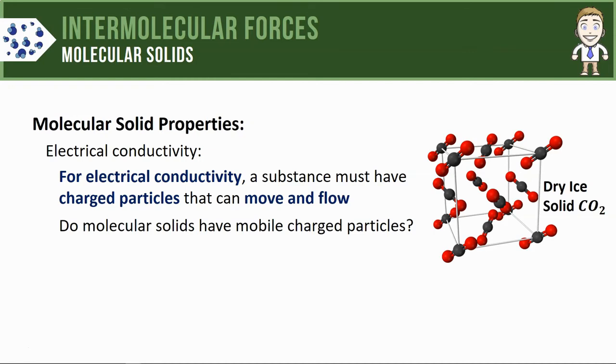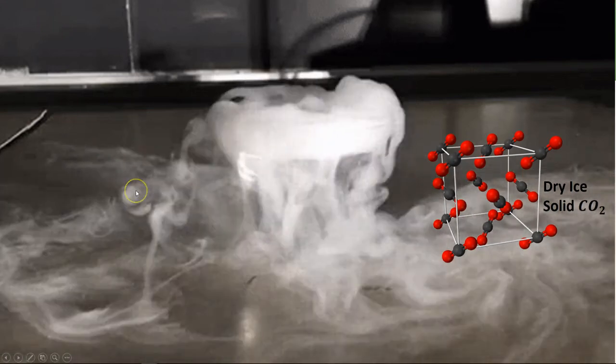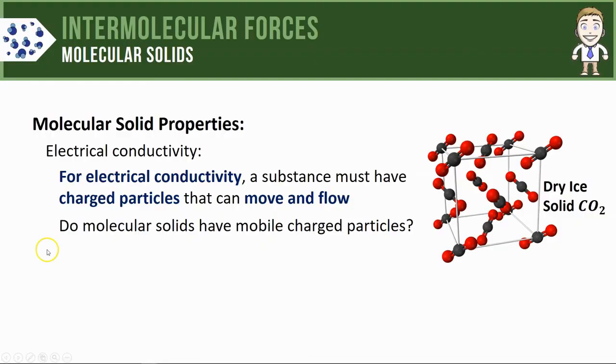We'll take a look at this by examining the solid structure for CO2, otherwise known as dry ice. You may have seen dry ice before around Halloween time, where if you drop some in a container of water it produces this cool foggy vapor effect.